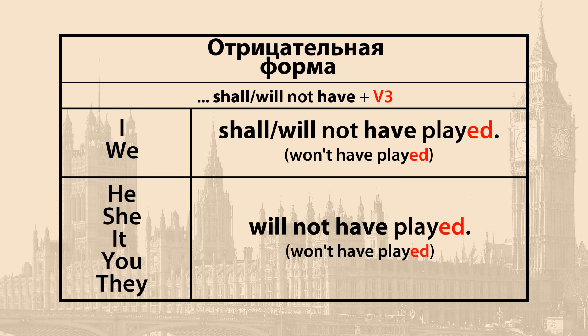Для составления отрицательного высказывания мы будем использовать отрицательную частицу not. В разговорном английском языке чаще употребляется сокращённая форма. Например: I will not have played или I won't have played. He will not have played или he won't have played. They will not have played или they won't have played.